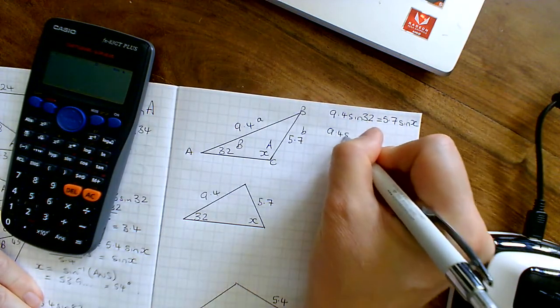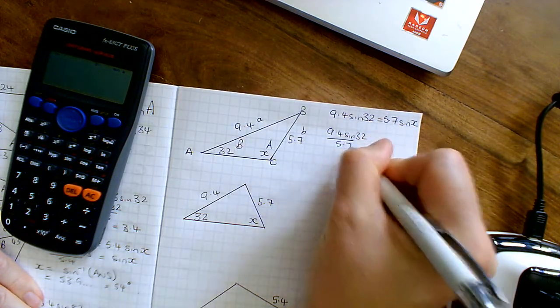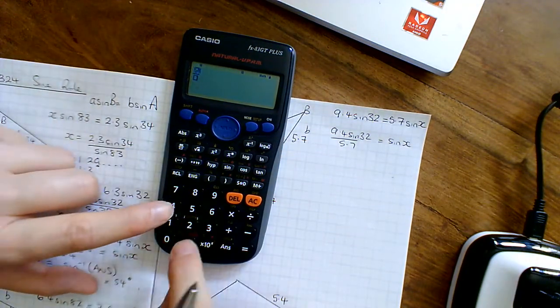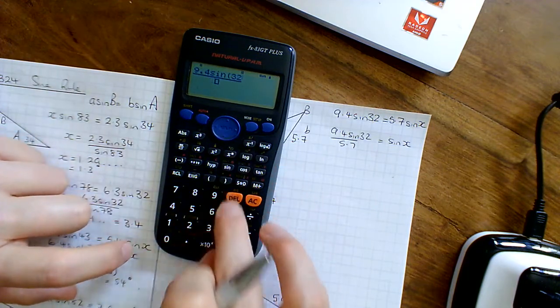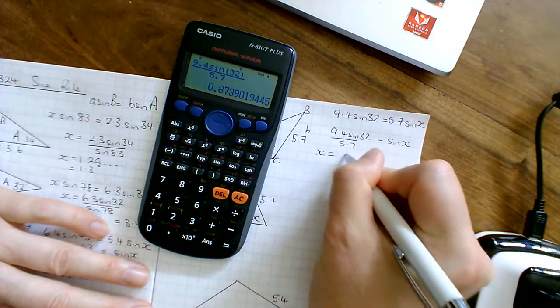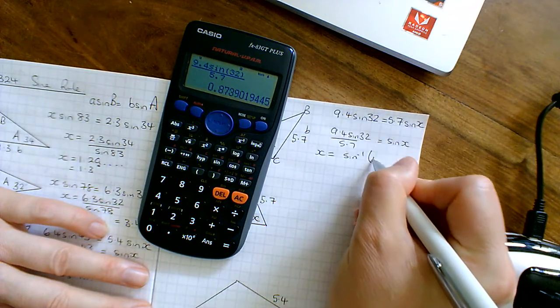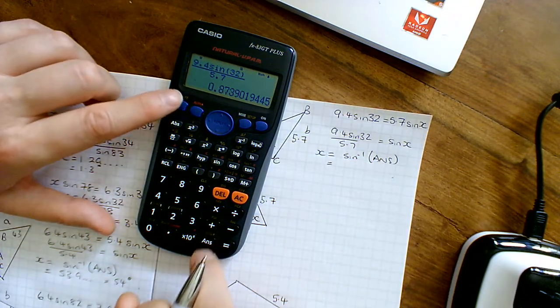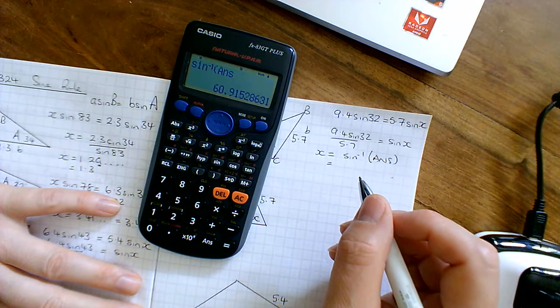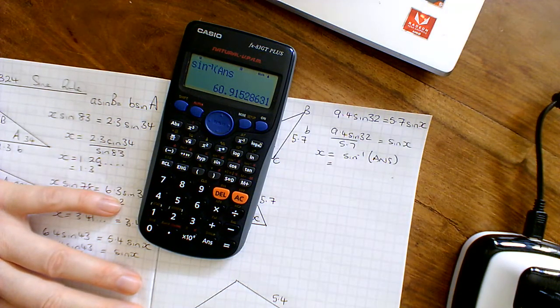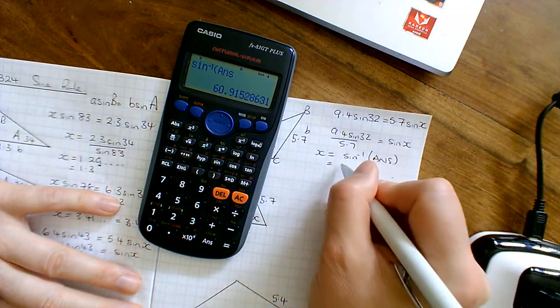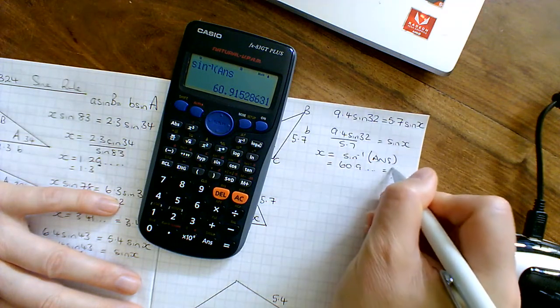Drop it on the bottom, so 9.4 sine 32 all over 5.7 equals sine X. Get your calculator on, fraction, 9.4 sine 32 bracket all over 5.7, equals this mess 0.87 other. So X is going to be equal to sine minus 1 of that thing. Shift sine minus 1 of that answer, and I've got 60.9 something or other. One decimal place, two possible answers, to the nearest degree. So I've got 60.9 which equals 61 degrees. So that's actually the answer for this question, so this one's going to be 61 degrees.